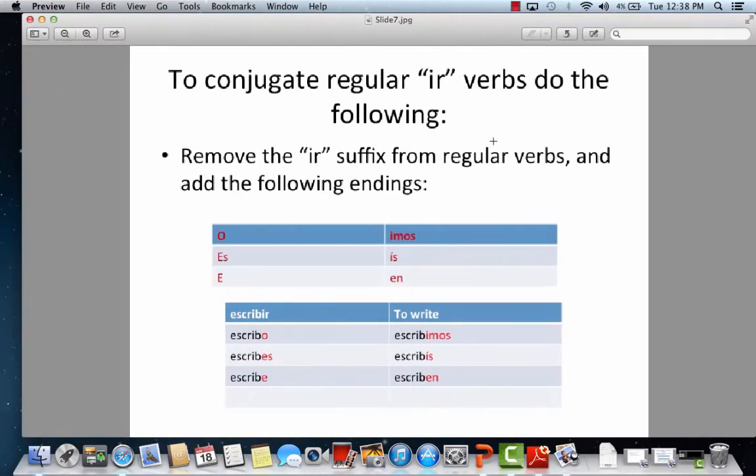So these are the endings for IR verbs in the present tense. Notice they're very similar to the ER verbs. The only, the we form, right here, is Imos, and the vosotros form is IS. Remember, students, the vosotros form all it means is you all. But in Latin America, for you all, we use third-person plural, which is EN.